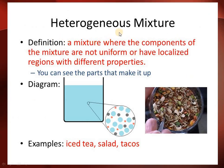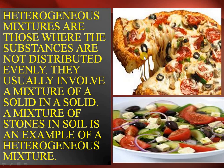Now, heterogeneous mixtures: these are where the components are not uniform — we can locate the different materials with different properties. A good example is pizza: the toppings are different and you can distinguish that this is tomato, this is olives, and this is cheese — all the things are easily distinguishable.